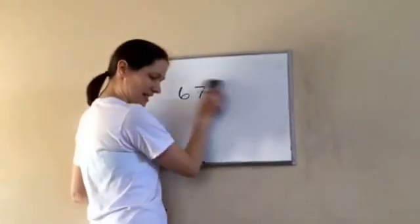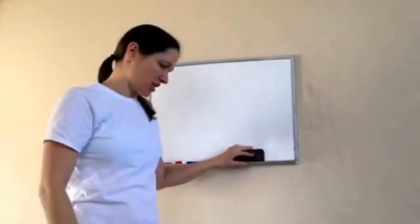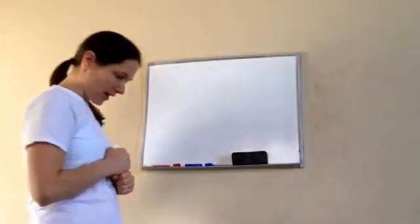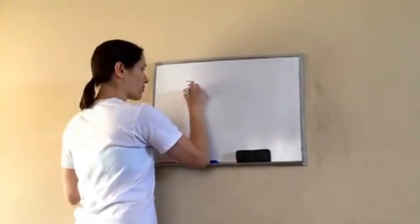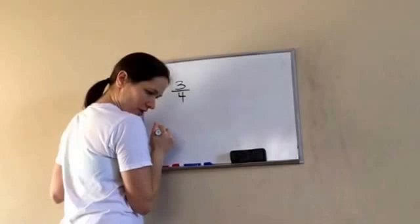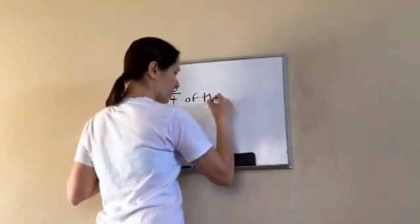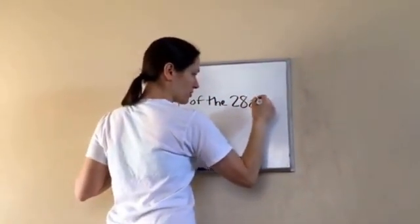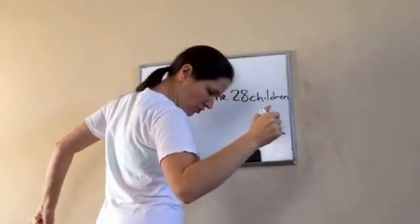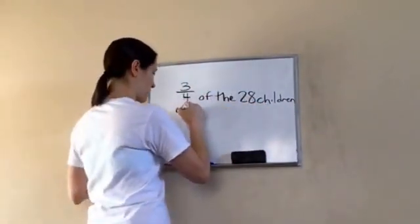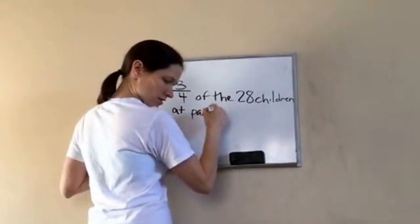Okay, 6th grade, Lesson 77. This is on finding unstated information in fraction problems. So listen to this story problem, Eli. It tells me that three-fourths of the 28 children at the park are boys.